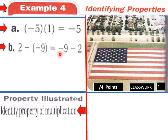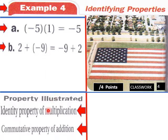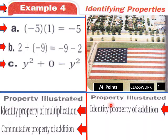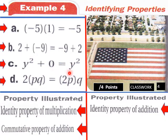For part b, two plus negative nine equals negative nine plus two. We're just switching places with our terms — this is the commutative property of addition. When you switch places you're commuting the terms. For part c, y squared plus zero equals y squared. That illustrates the identity property of addition — when you add zero to anything, you get that same value back.